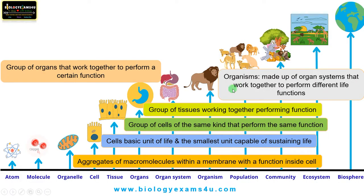These systems work together to make an individual organism. These organ systems combine and work in tandem to perform different life functions like metabolism, growth, and reproduction. Organisms include plants, animals, bacteria, etc.